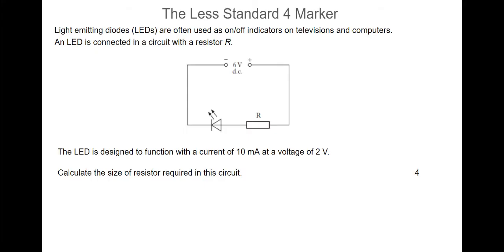Now, here's a slightly less standard four mark question. And these come up from time to time, and it was worth mentioning. A calculation like this, where you get four marks, is usually a standard three mark question with a bit added on. So if you ever see a calculation with a fourth mark, there's probably something more than just straightforward put down a formula, put down your working, work out the answer. In this case, a light emitting diode is connected in this circuit, and it's designed to function with a current of 10 milliamps and a voltage of two volts. We need to calculate the size of the resistor required in this circuit.